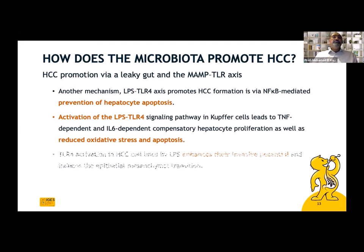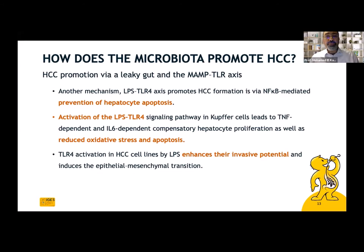Another mechanism for the LPS–TLR4 axis is that it promotes HCC formation through NF-κB-mediated prevention of hepatocyte apoptosis. Activation of this pathway in Kupffer cells leads to TNF-dependent and IL-6-dependent compensatory hepatocyte proliferation, as well as reduced oxidative stress and apoptosis.